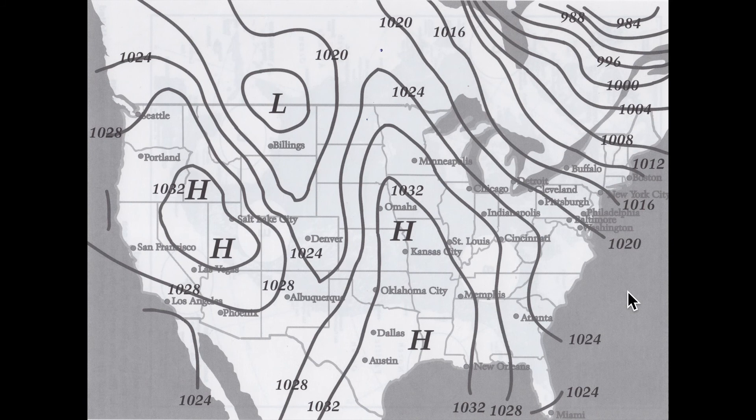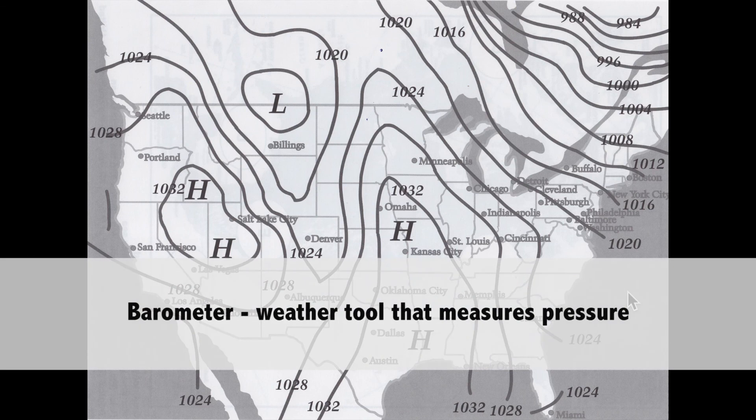Before we go into the details of the map, let's talk about a keyword: barometer. The barometer is a weather tool used to measure air pressure, and the word itself literally tells you what it does. 'Meter' means to measure things — that's why meter sticks, centimeters, and millimeters all use that word. The word 'bar' at the beginning has an origin meaning weight or pressure.